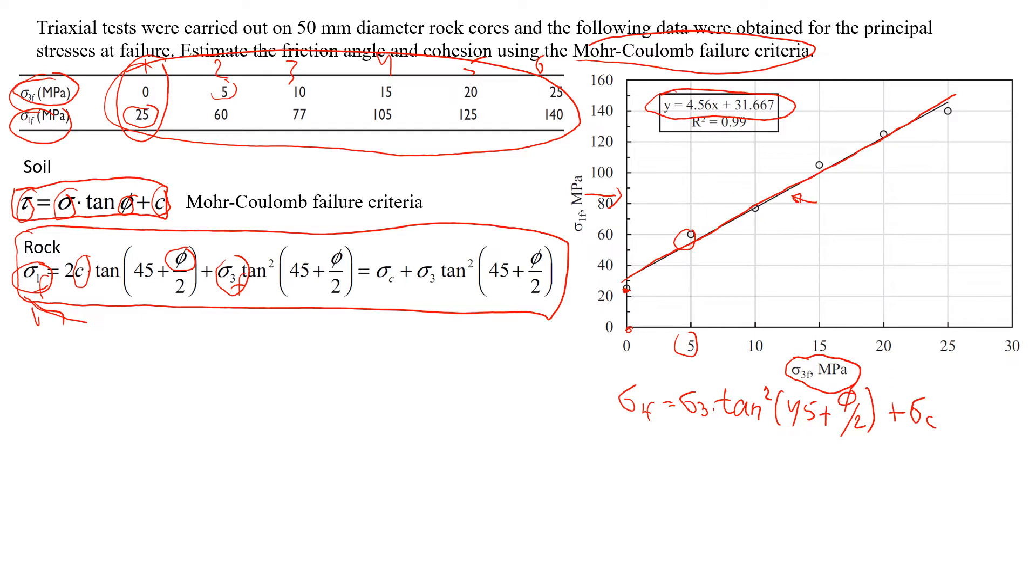So if we look at this equation and we know what we plot, you will see that this y is actually sigma 1, correct, and this x here will be sigma 3, correct. So that's what that's the data plot.